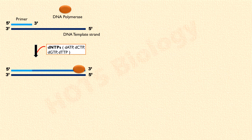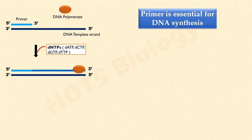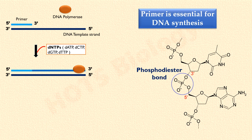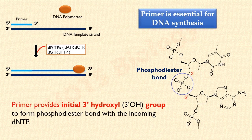Now here we need to note a very important point. Primer is one of the essential requirements of DNA synthesis. Why? Because DNA polymerase cannot catalyze the synthesis reaction on its own. It requires a 3' hydroxyl group to form a phosphodiester bond with the incoming deoxynucleotide. And this initial 3' hydroxyl group is provided by the primer. Once DNA synthesis is initiated, each deoxynucleotide incorporated in the growing DNA chain has a hydroxyl group at the 3' position of the deoxyribose molecule. And thus, DNA polymerase keeps on elongating the chain.